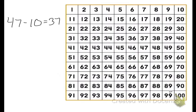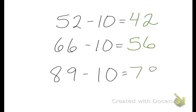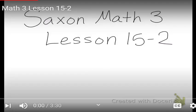Last one. What about 89? 89 minus 10. 8 10s minus 1 10 equals 7 10s. And the ones stay the same. 89 minus 10 equals 79.